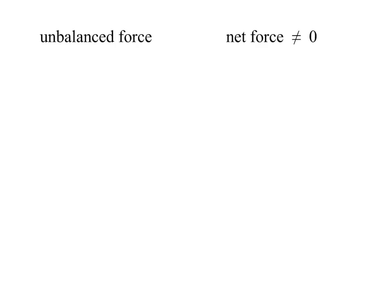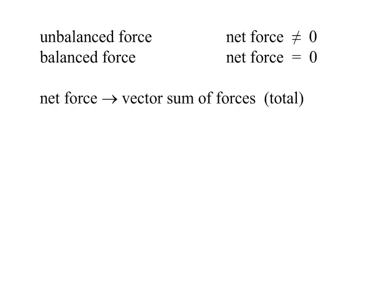Again, an unbalanced force is where net force is not zero, and a balanced force is net force is equal to zero. So that could mean no force, but it also could mean there's two forces that are equal but pushing in opposite directions, then that is still a net force of zero. Remember, net force is always the vector sum of all the forces at work.